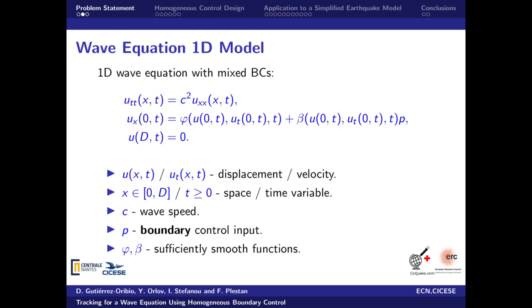The wave equation to be studied is shown here. The states are u as displacement and ut as velocity. x is the space variable and can take values from 0 to d. t is the time and c is the wave speed.